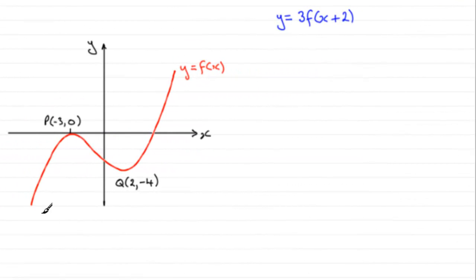Now in this question, we're given the graph of y equals f of x, and it has two stationary points, p and q, p at minus 3, 0, and q at 2, minus 4.